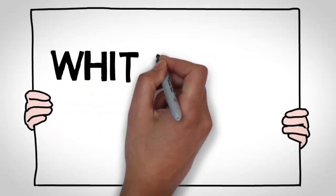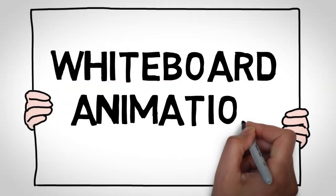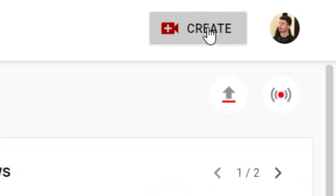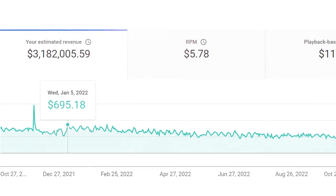Here's how to make a fortune with whiteboard animation videos. Step number one, get yourself a whiteboard. Step number two, write down how to get rich quick. Step number three, film yourself with the whiteboard. Step number four, upload to YouTube and you're done — you're now a millionaire. Thank you for watching, I'll see you next time.